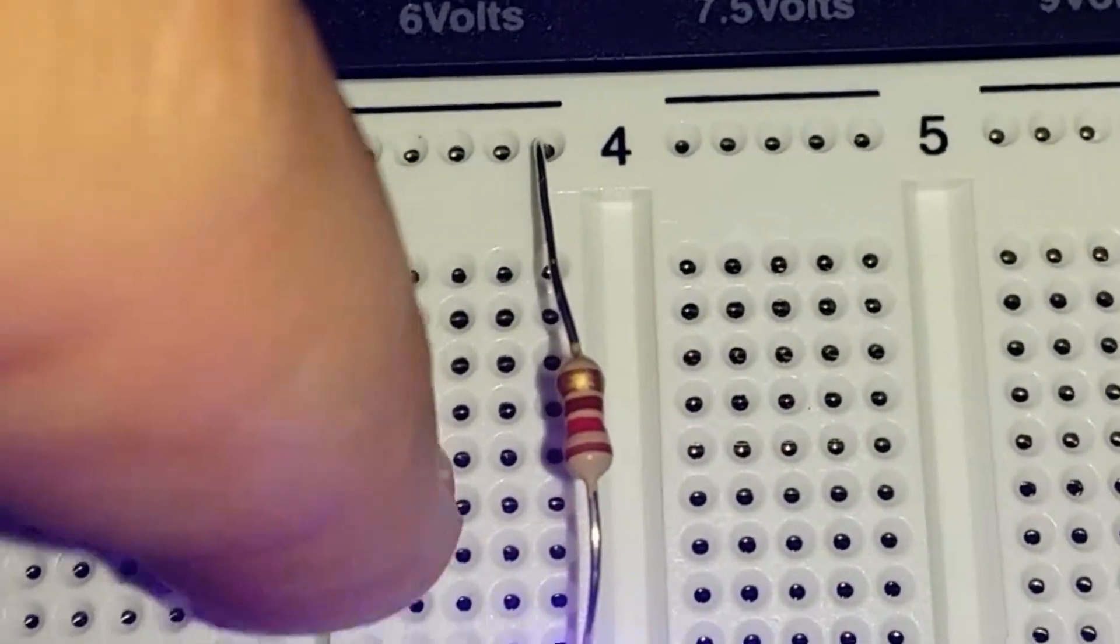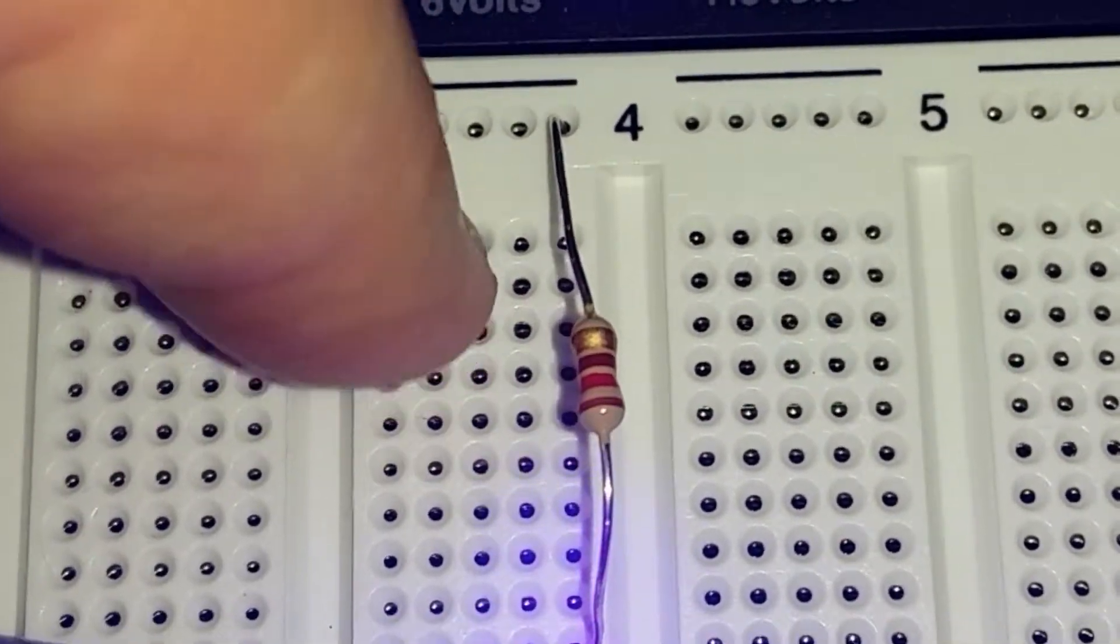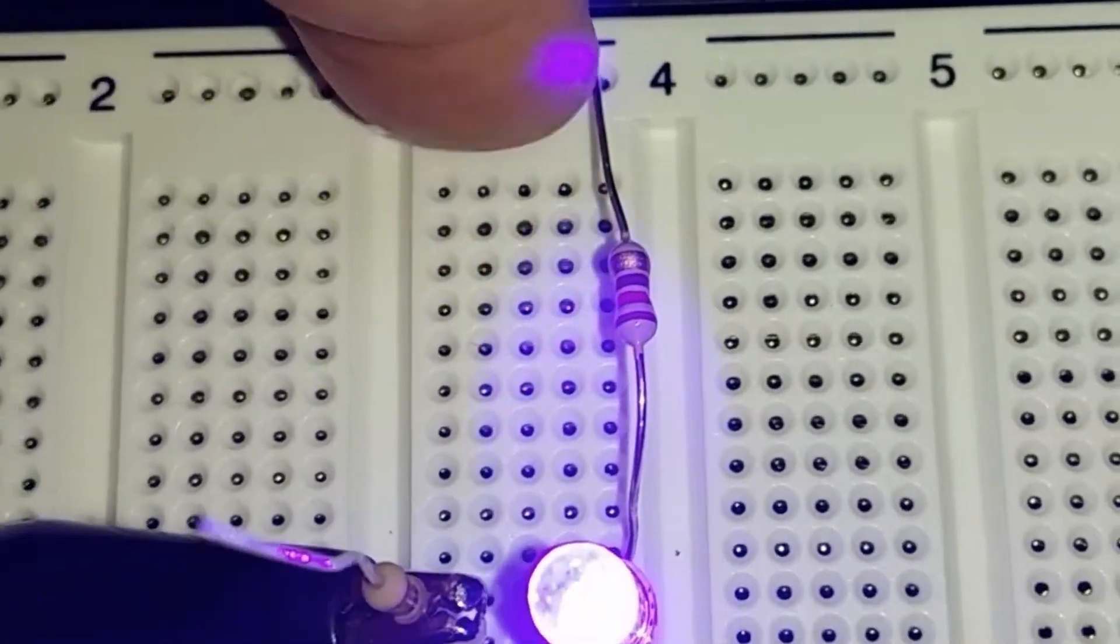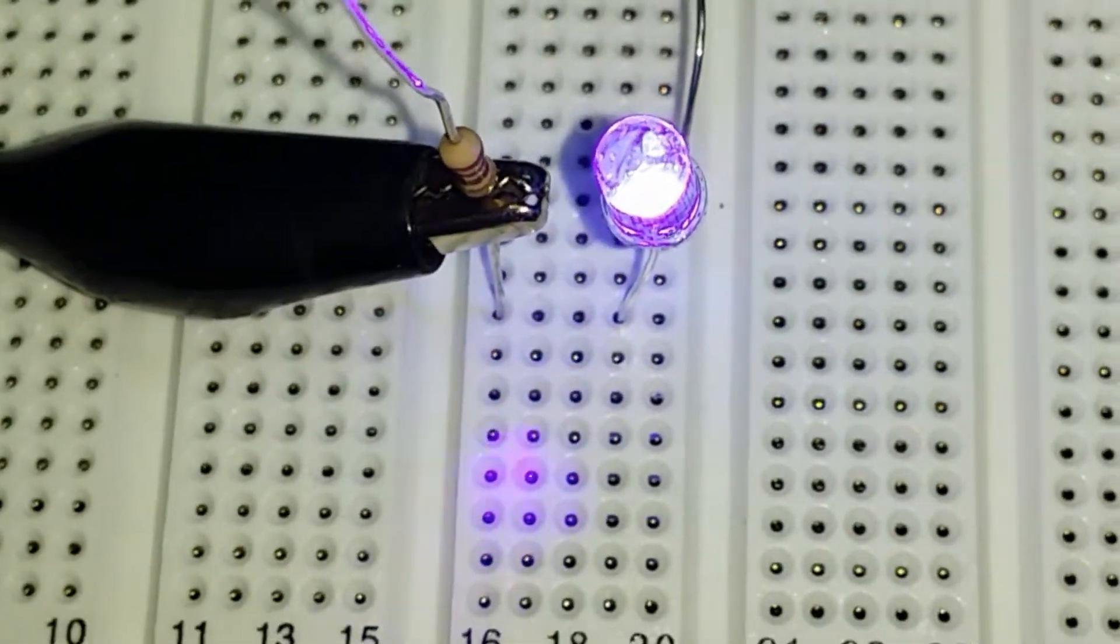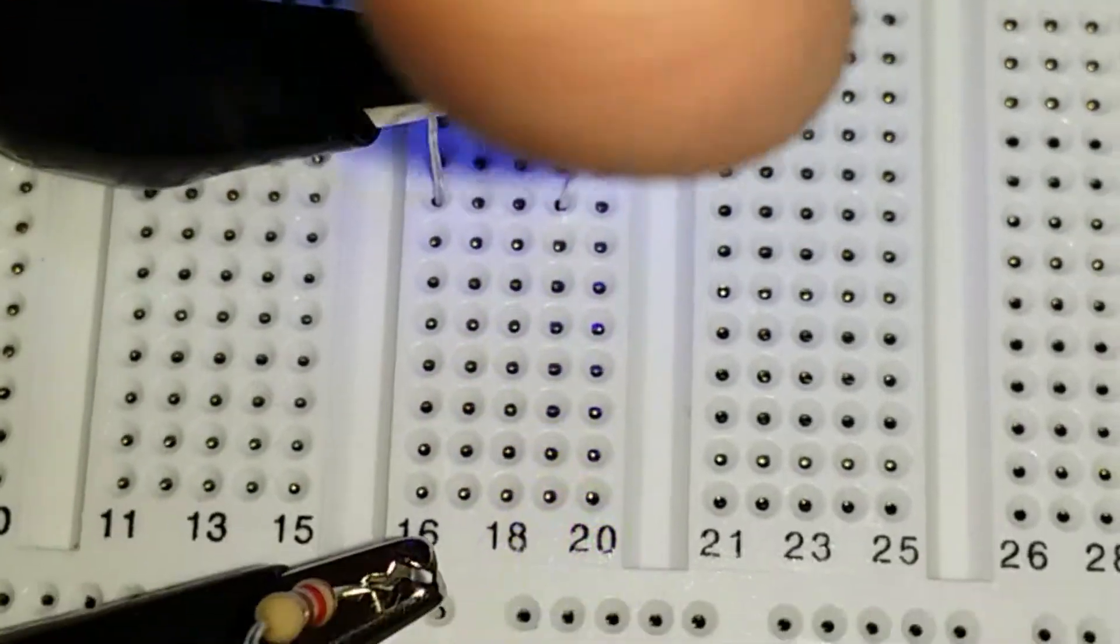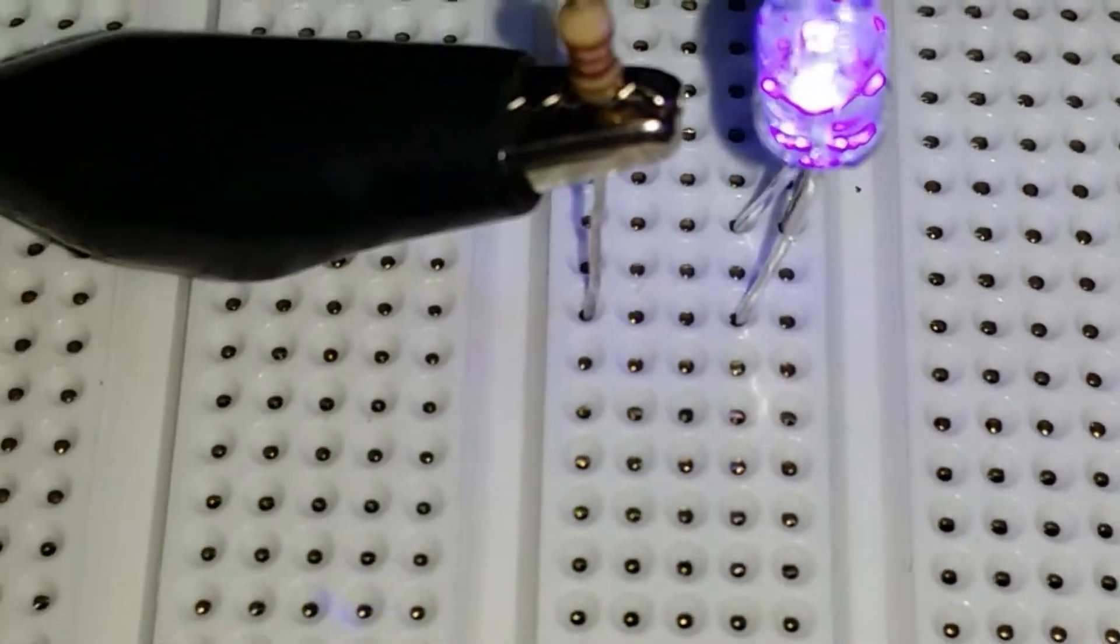But they're not columns the way they're wired inside, because I wired this up from top to bottom and it didn't work. The LED apparently, this goes across. Can you see that?